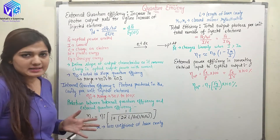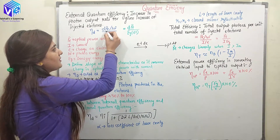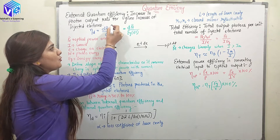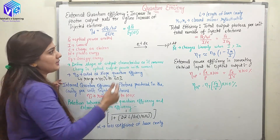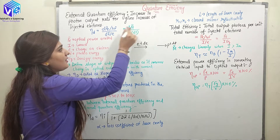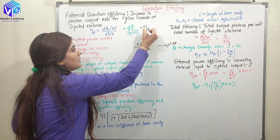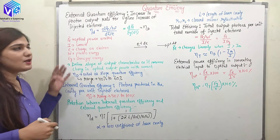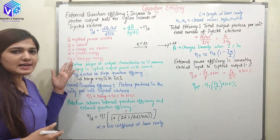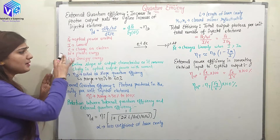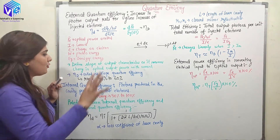External quantum efficiency is the increase in photon output rate for a given increase in injected electrons. It is represented by eta D. Eta D equals dPE divided by hf, divided by dI by e. Here dPE over hf represents the increase in photons, and dI by e represents the increase in current. Now hf upon e gives us EG, so dPE upon EG into dI gives eta D. PE is the optical power emitted, I is the current, e is the charge on the electron (1.6 × 10⁻¹⁹ coulombs), hf is the photon energy, and hf upon e is represented as EG — the band gap energy.